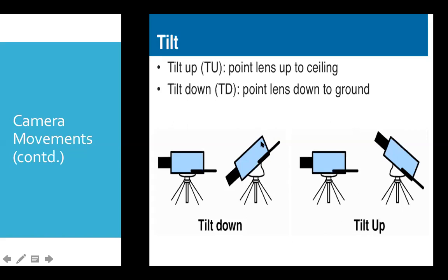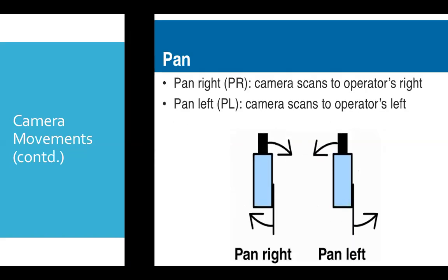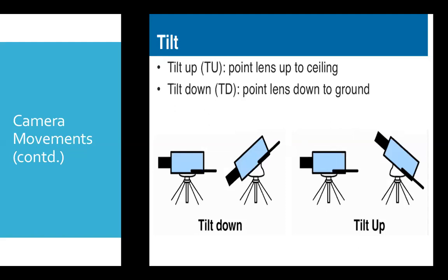Now you understand that the horizontal movement of camera is pan movement whereas the vertical movement is tilt movement. There is pan right and pan left, tilt up and tilt down.